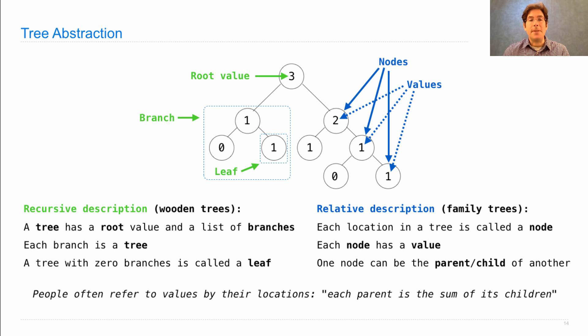Now, it's very common that people will talk about the values in the tree by referring to their locations. So we'll often say each parent is the sum of its children. That's the definition of a Fibonacci tree. Rather than saying the value of each parent node is the sum of the values of their children. So just be careful that nodes refer to locations, but those locations have values. And so it's common in English to refer to them using the same language.